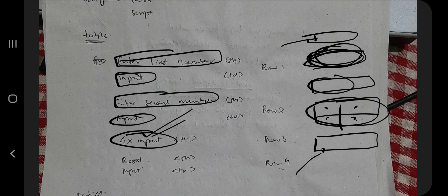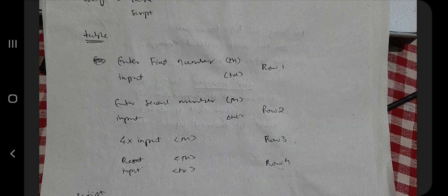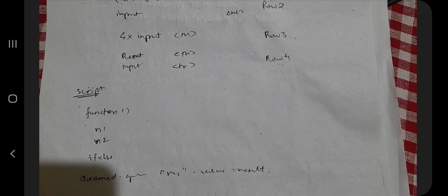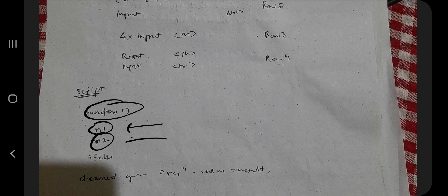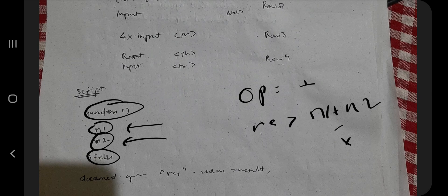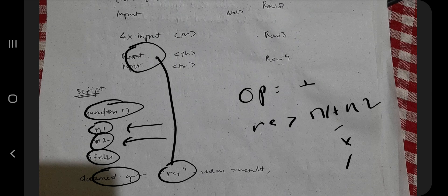For the operator buttons, the input type will be 'button'. The inputs for numbers use input type='number' and the operator inputs use input type='button'. In the script we have a function with variables n1 and n2 retrieved by document ID, then we apply an if-else condition: if operator is plus, result is n1 + n2; if minus, n1 - n2; if multiply or divide similarly. Finally we set the result value using the element's ID so it is visible on the HTML page.